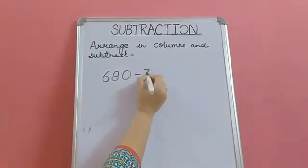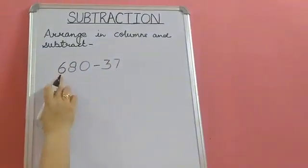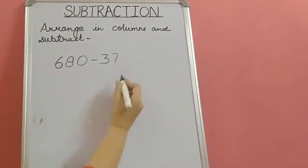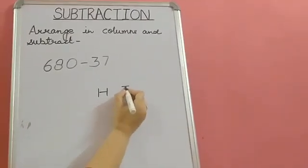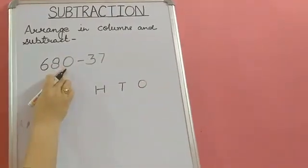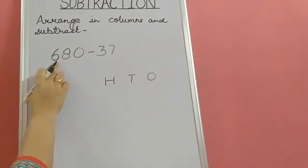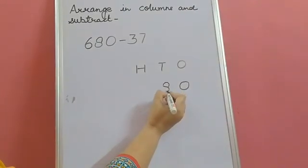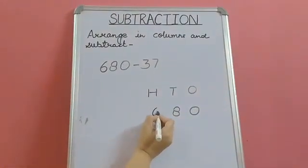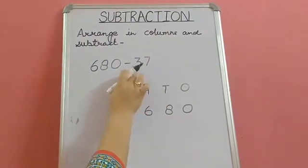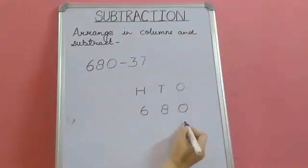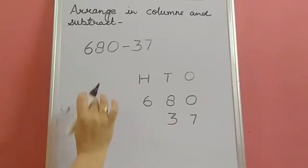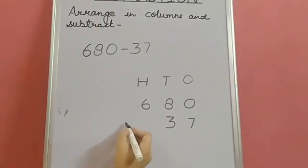Now children, let's take up another example. 680 minus 37. In the first number there are 3 digits. In the second number there are 2 digits. When we have 3 digits, we write hundreds, tens and ones. Starting from the right side. We always start from the right side. We will place these numbers in these columns. How many ones? 0 ones. How many tens? 8 tens. How many hundreds? 6 hundreds. The second number. Children, the second number has only 2 digits, so starting from the right side. How many ones? 7 ones. 3 tens. How many hundreds? No hundreds. Because when we have only 2 digits, we don't have hundreds. So let's subtract.